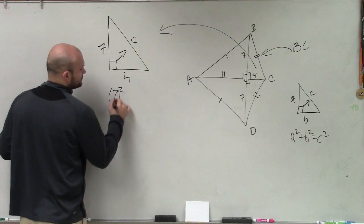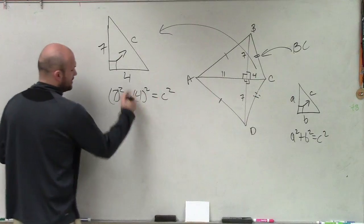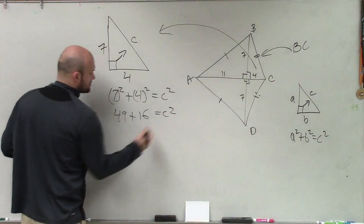So I say 7 squared plus 4 squared equals c squared. 7 squared is 49, plus 4 squared is 16, equals c squared. So that's going to be 55, 65.